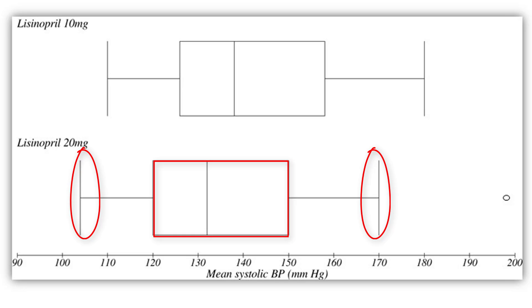The left part of the box is the lower quartile, which equates to the 25th centile. 25% of the data will be lower than this number.